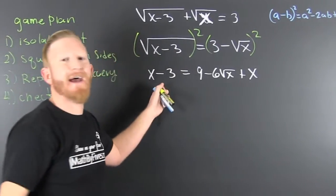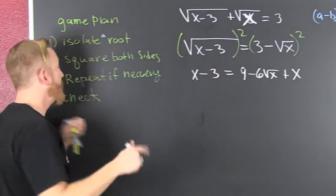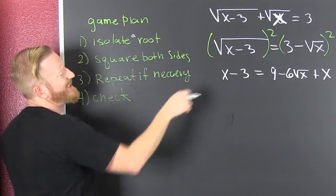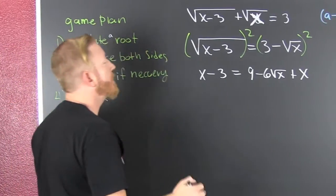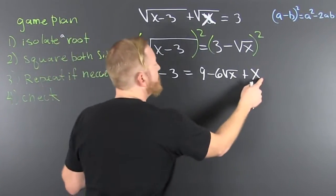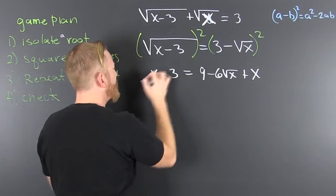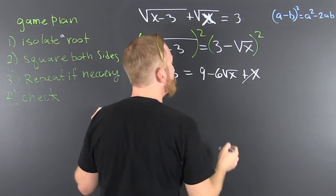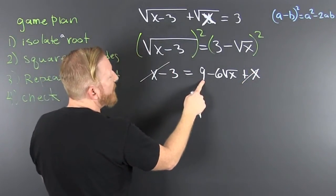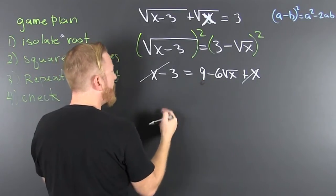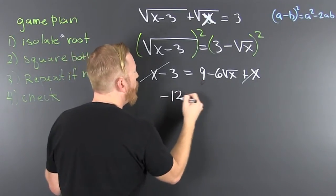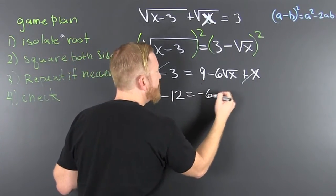Alright. Now repeat if necessary, kind of like shampoo. We need to get the root out, so we're gonna subtract an x off both sides - you're gone - and then I'm gonna subtract that 9 off both sides. So that's -12 is equal to -6√x.